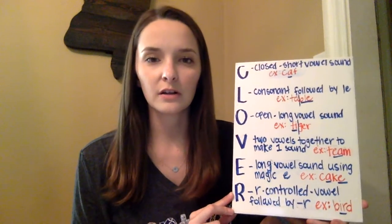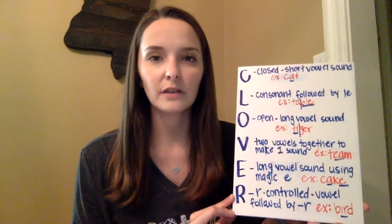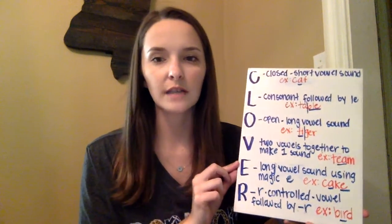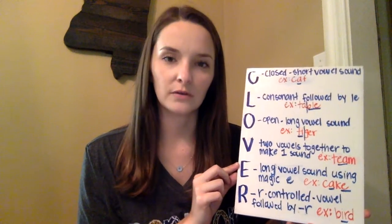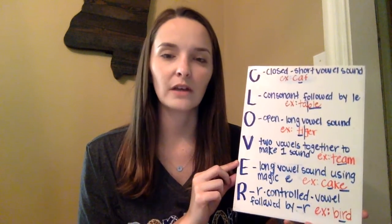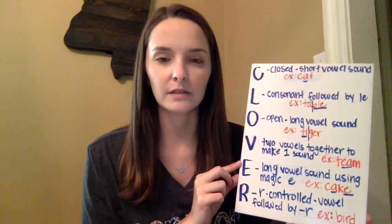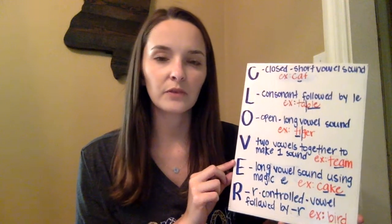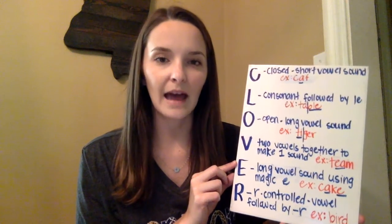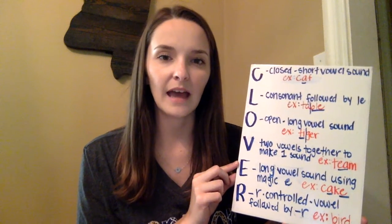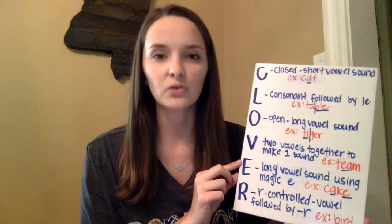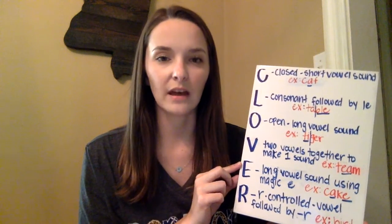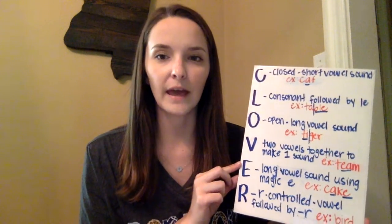To figure out our syllable types we use the acronym CLOVER that you see over here on the side. The C stands for closed — that's when you have a short vowel sound. The example for this one is 'cat.' The A in cat says 'ah,' which is short. Short vowels say their sound, not their name.